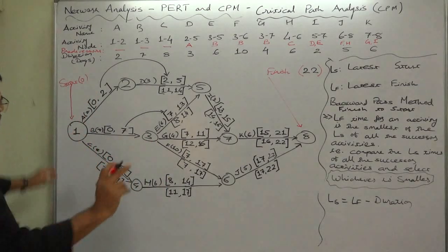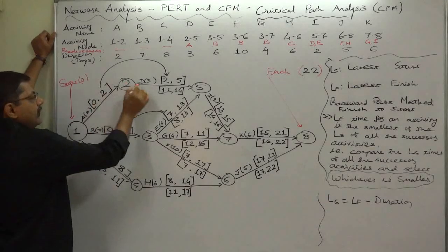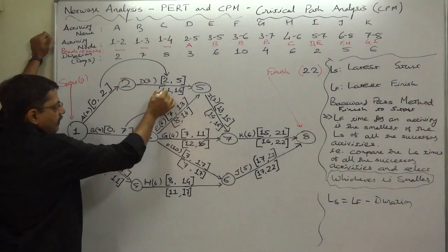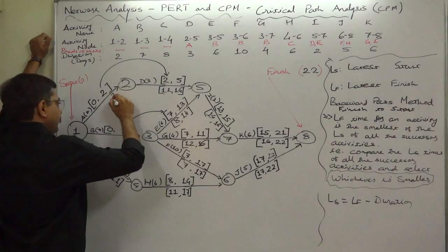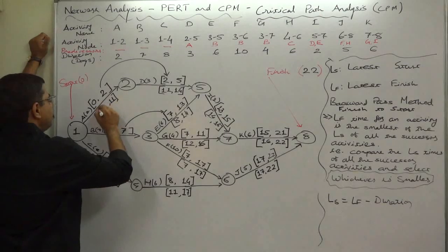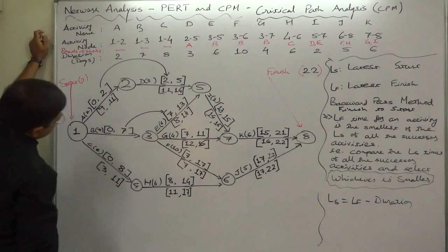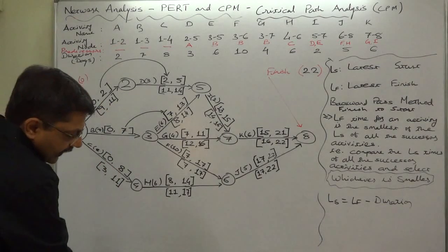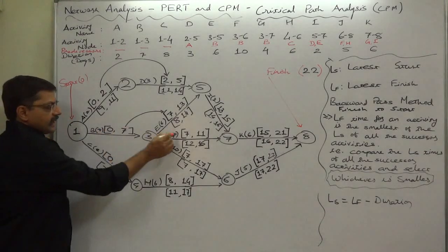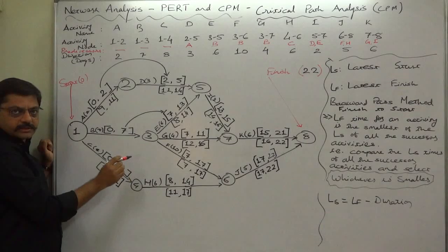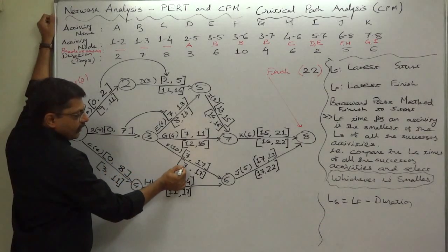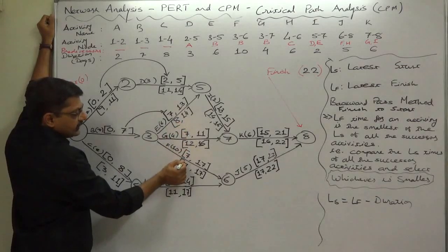For activity A, which has only one successor D, D's latest start time becomes the latest finish time of A - that is 11. So 11 minus 2 = 9 becomes the latest allowable start time of A. In case of B, there are three successor activities, so first take the latest start times of all successor activities.